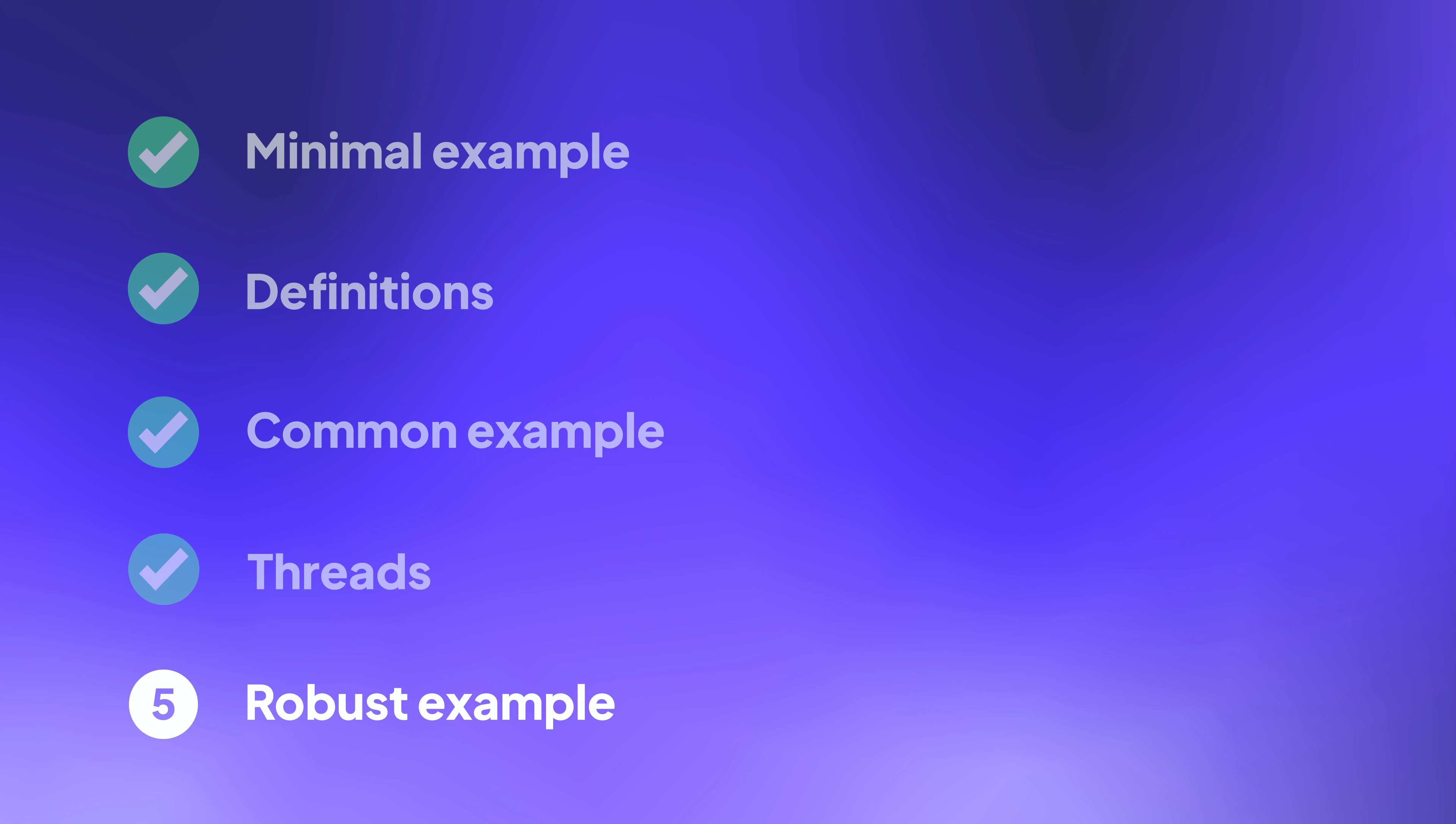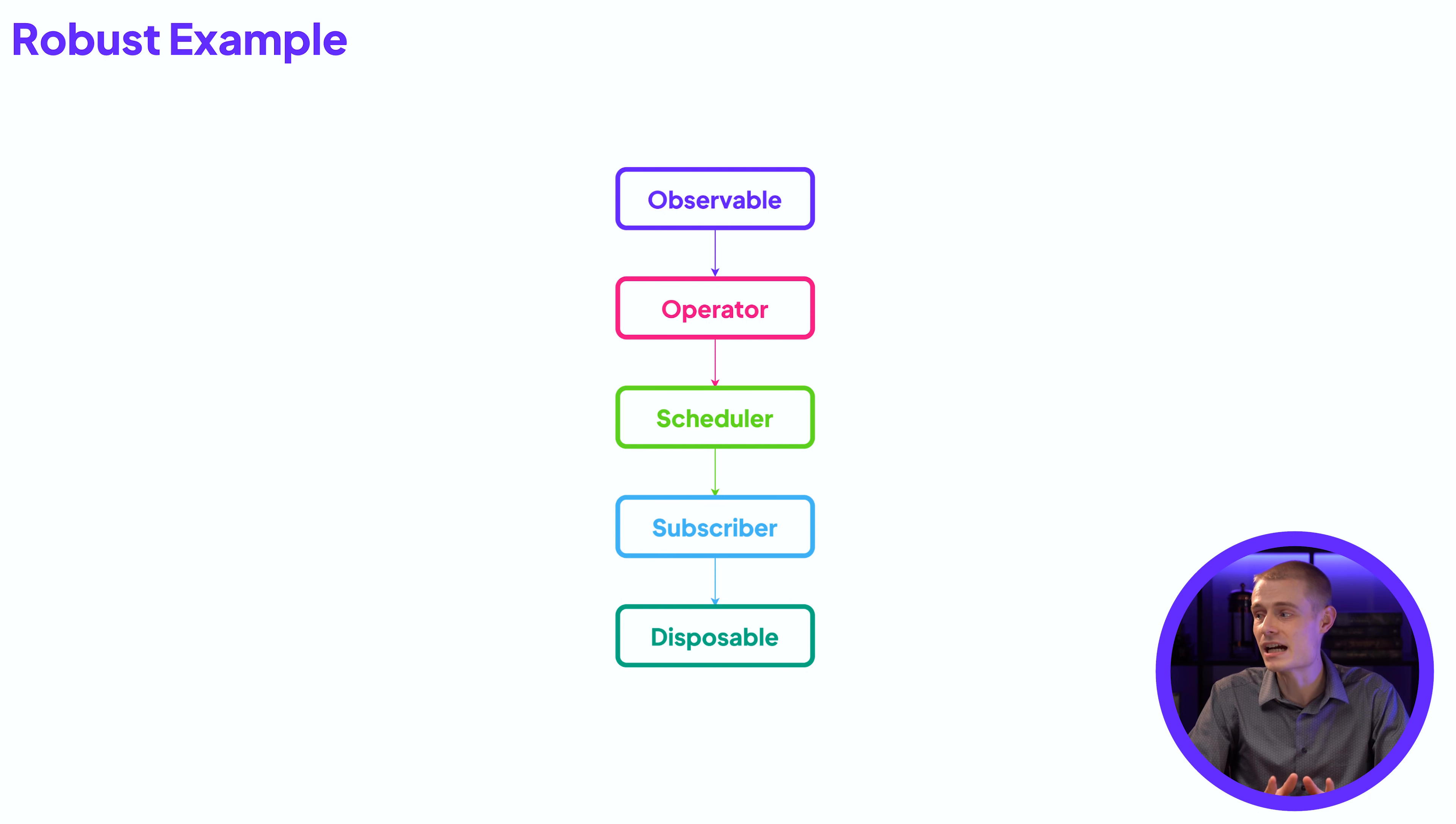So now we've fleshed out a very common use case. Let's take a look at what I'm going to call a robust example, which adds one more component to the mix. As you can see with this diagram, we now have a disposable at the very end. Now this is a way for the subscriber, that thing that used to be at the very end, to provide feedback to things that are happening further upstream. Now this isn't very useful for one and done operations. Like you make one server call and you get the response one time and you process it. It's not so useful for those cases, but it is more useful for operations that are either long running or can occur on a regular basis.